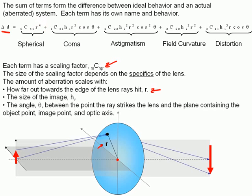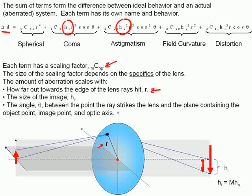You see that a lot of these terms also have other factors in them, which is h sub i in this equation. This h sub i is the height of the image. And remember, the height of the image is simply the magnification times the height of the object. So it's this actual distance right here. And so some have h_i, some have h_i squared. Here's one that actually depends on h_i cubed.